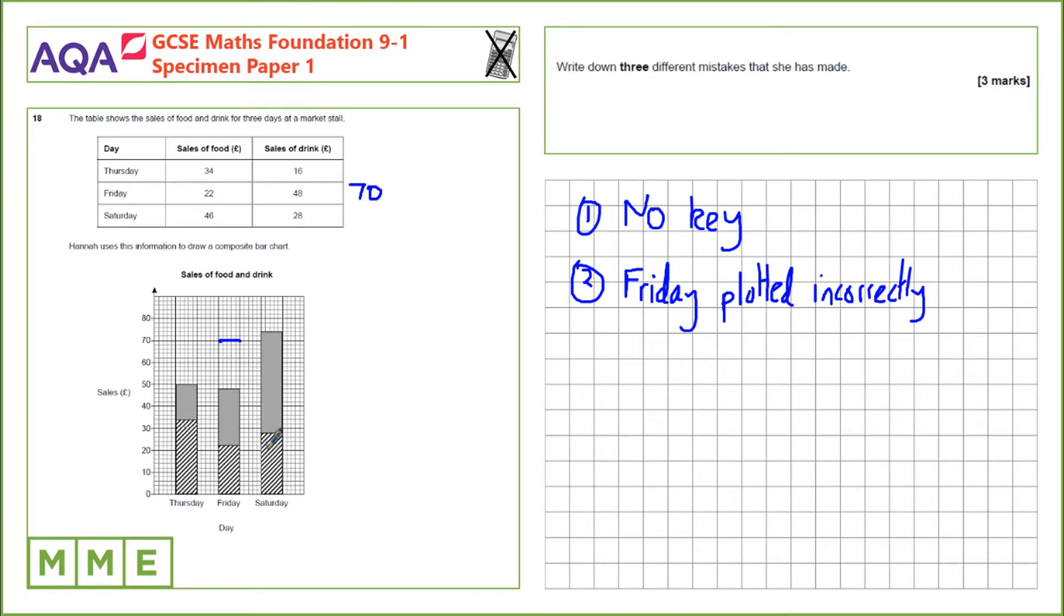However, if you look at the bar here for Saturday that's 28 pounds which is sales of drink and 46 pounds which is sales of food, these two have been plotted the wrong way around. So, Saturday the bars are the wrong way around.